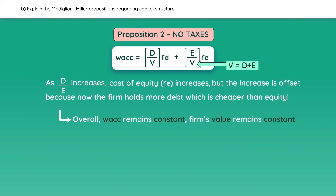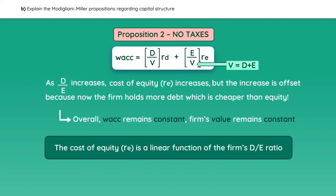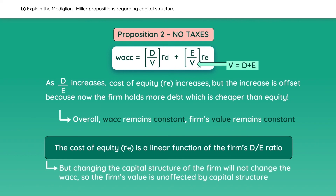In other words, we can say that the cost of equity is a linear function of the company's debt-to-equity ratio. But changing the capital structure will not change the WACC, which is why the value of the firm is not affected by the capital structure.